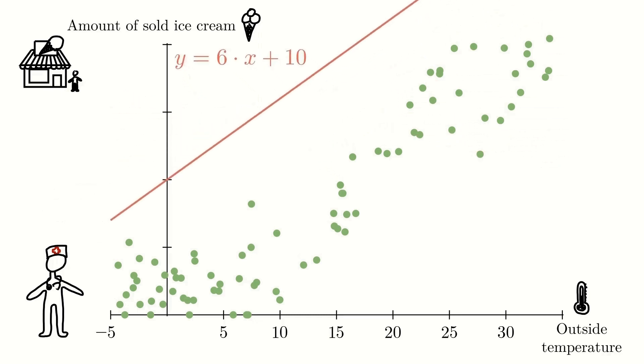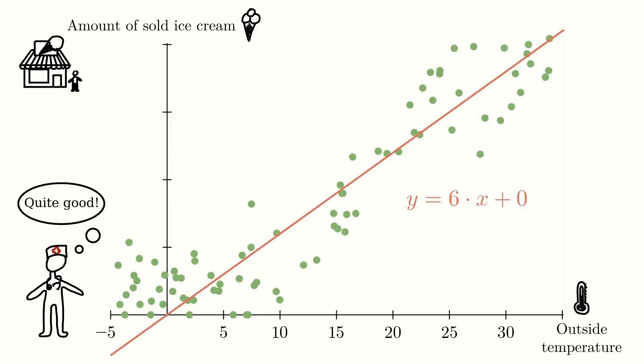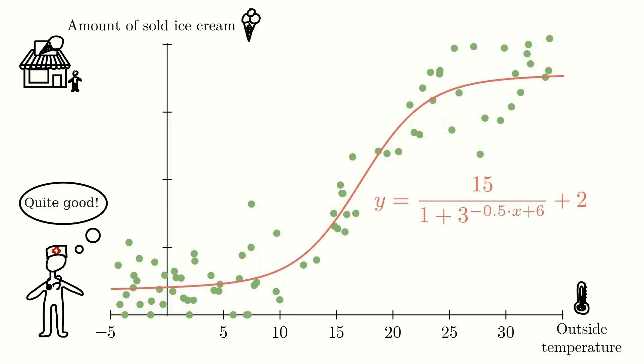But if we now change the k and m values, we eventually get a straight line that fits the data quite well. We can also fit the data even better if we instead of using a straight line, y equals kx plus m, we use a slightly more complicated line like this one.